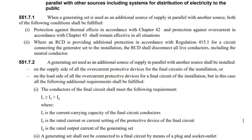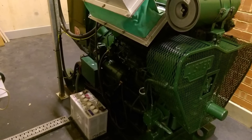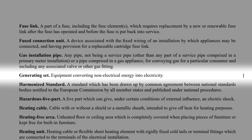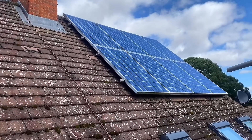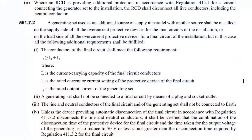One of these is in BS 7671 regulation 551.7.2. This regulation is in the section that speaks about generating sets. Now the temptation is to think of that as something like a diesel powered generator used for backing up a hospital. However, in the definition section of the regs, a generating set is simply defined as equipment converting non-electrical energy into electricity. So a solar PV array of panels would definitely be classed as a generating set. The regulation we're interested in is 551.7.2, which is quite a lengthy one, so we're going to pick out the parts relevant to this video.